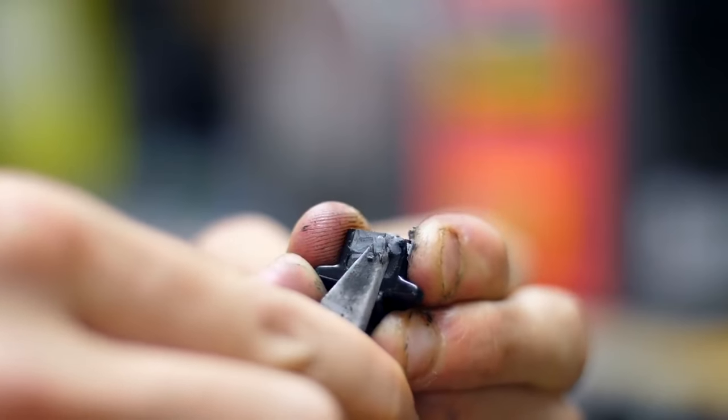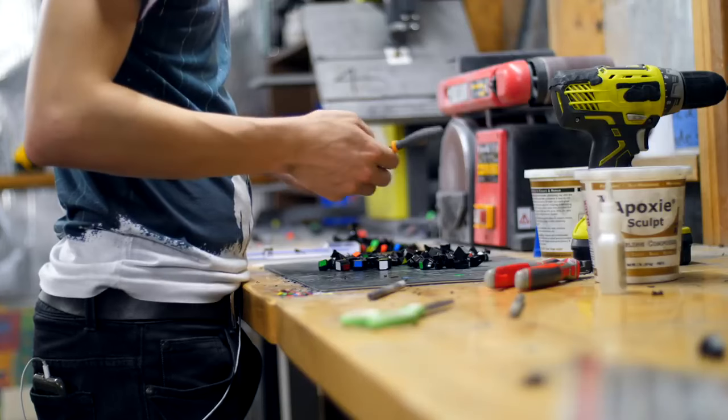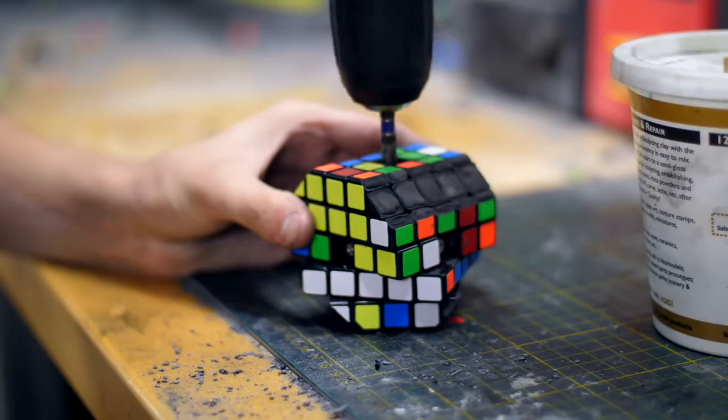I cleaned up all the pieces and then I scraped off any epoxy sculpt that would prevent me from reassembling the puzzle. And after I did that, I reassembled the puzzle so that I could sand it down into its final shape.